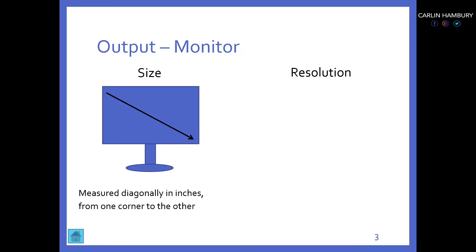Let's look at the first output device: our monitor. When they tell you it's a 32-inch TV, how are they measuring that? They measure from the top corner diagonally over to the other corner in inches. That is how they determine the size. So if it's a 65-inch TV, it means from that corner all the way down to that one, it is 65 inches in length.